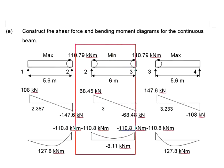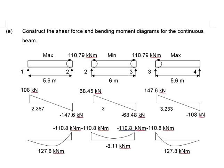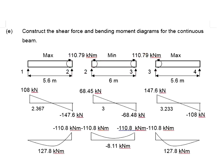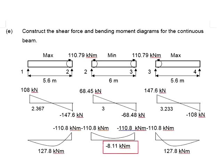Next, proceed to the middle span. These two moments shown here correspond to the end moments. Find the area of the shear force diagram and get the difference between these two areas. In this case, a negative moment is obtained. That means instead of having the bending moment diagram in the positive region, the moment will now be in the negative area.